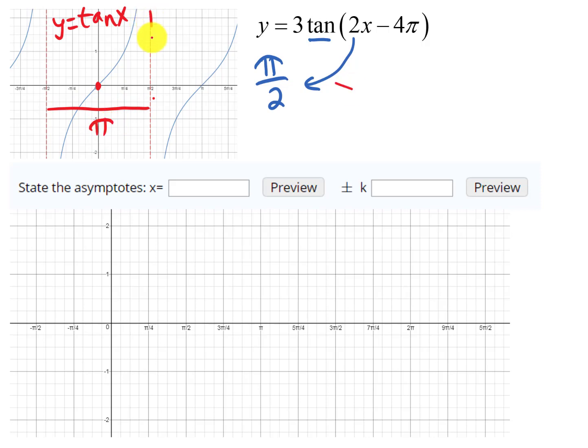There was an asymptote at π over 2 to begin with. We need to figure out where that asymptote ends up when you change the period and then also when you phase shift it. So let's look at that and we'll put the graph below. The first thing we're going to do is say if the period is π over 2, we're not going to do the phase shift yet.